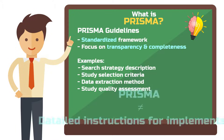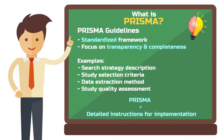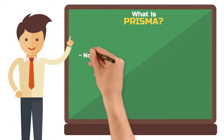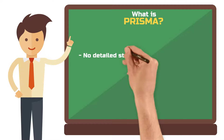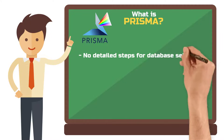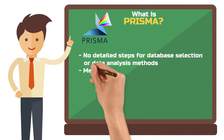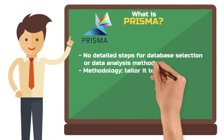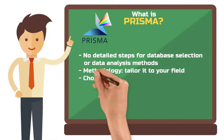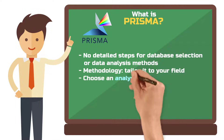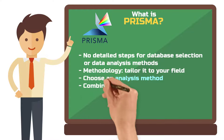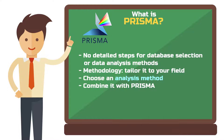One important point is that PRISMA does not provide specific instructions on how to conduct the systematic review itself. It does not include detailed steps for what databases to select or how to analyze the data. These tasks fall under the methodology of the systematic review and are a bit dependent on your field. You need to come up with your own analysis method and just combine it with PRISMA.